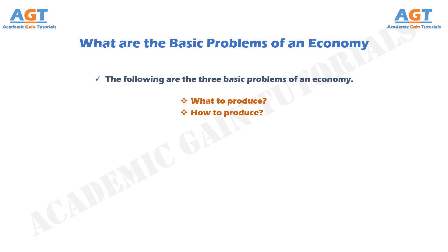The final problem is: for whom to produce. Once the problems of what and how to produce are solved and goods are produced, the third basic economic decision is for whom to produce. This means how the national product is to be distributed among the members of society — that is, who should get how much of the total amount of goods and services produced in the economy. The third problem is thus the problem of sharing of the national product. Distribution of the national product depends on the distribution of national income. Those people who have larger incomes would have a larger capacity to buy goods and hence will get a greater share of goods and services.